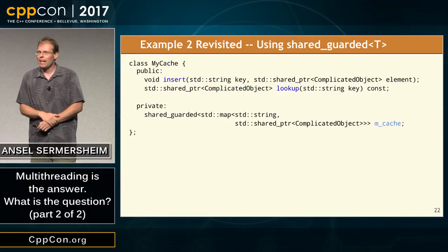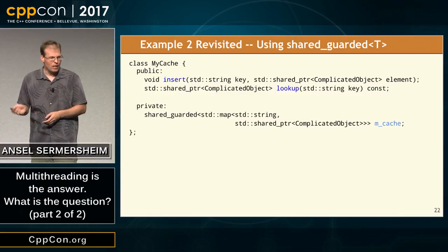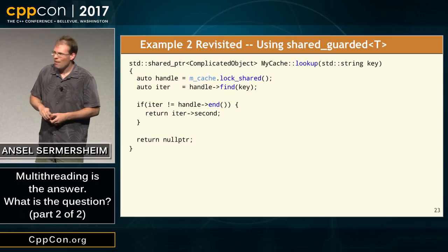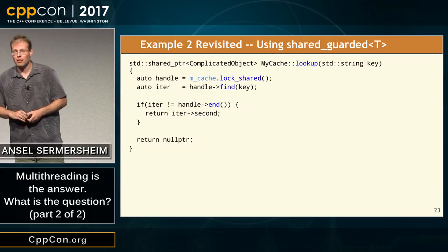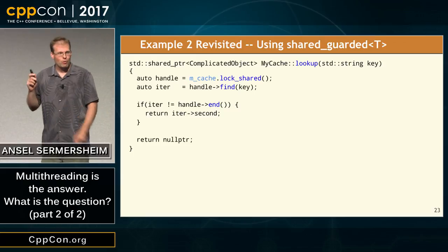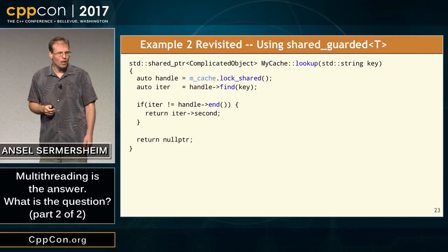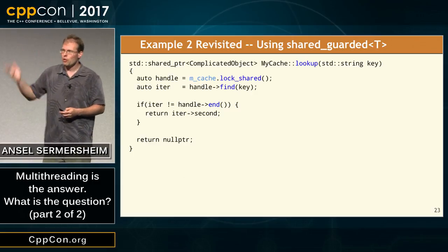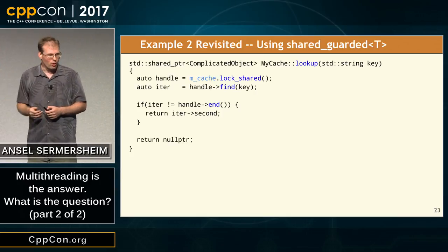If I implement my cache example and put the map in a shared_guarded container, I can be guaranteed that if I try to use operator bracket the old way, it won't compile — because operator bracket is not const. It will correctly detect that I'm doing a write access to something I promised to only read. So I realize I have to use find, the non-mutating way to access a map, and I write the code to do the lookup, check if the value was in there, and return it appropriately.